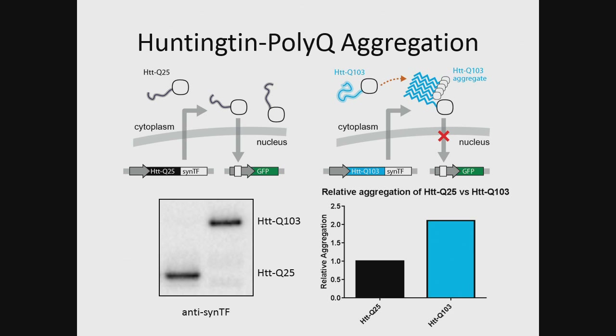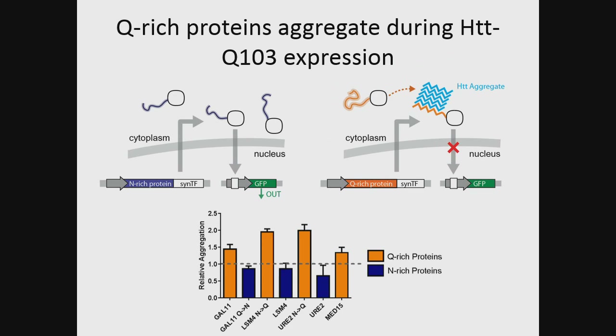One major hypothesis of the toxicity of Huntington poly-Q is that the aggregates are very promiscuous and sequester a lot of other cellular factors — something we can directly measure with Y-TRAP. If we hook up other cellular proteins to our sensor, we can determine how much they aggregate as we overexpress poly-Q and make Huntington aggregates. Whether we hook up a Q-rich protein or an N-rich protein makes all the difference: all of the Q-rich proteins co-aggregate and are sequestered by Huntington aggregates, whereas N-rich proteins, which are equally disordered, are for the most part left alone.